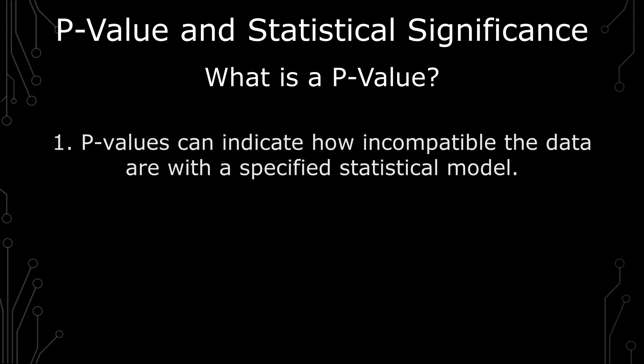The first principle is p-values can indicate how incompatible the data are with a specified statistical model. So you're basically seeing in regards to the null hypothesis, how compatible is the data that you've observed with that null hypothesis.